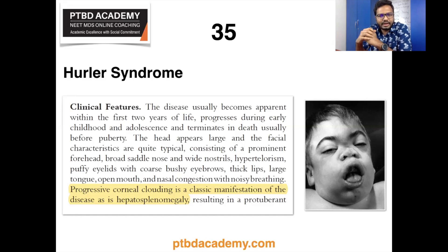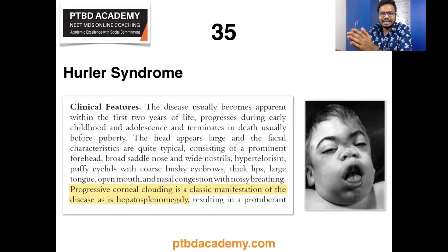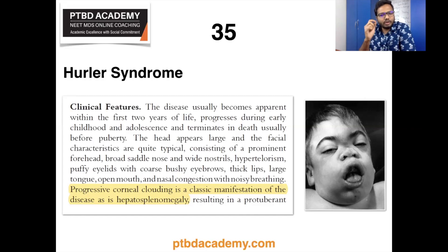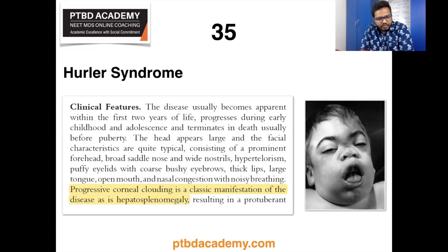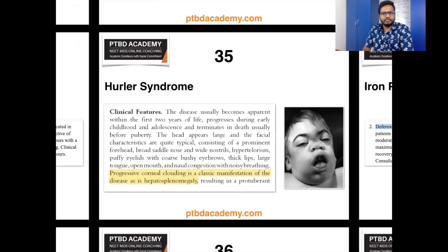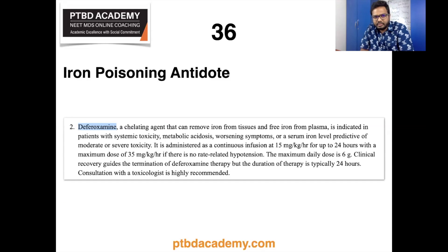Clinical features of Hurler's syndrome include a large head with a prominent forehead, broad saddle nose, wide nostrils, hypertelorism, puffy eyelids with coarse eyebrows, thick lips, large tongue, open mouth, and nasal congestion with noisy breathing. Progressive corneal clouding is a classic manifestation, as is hepatosplenomegaly resulting in a protuberant abdomen. A short neck, spinal abnormalities, and claw hand due to flexion contractions are also typical. These individuals are mentally challenged.